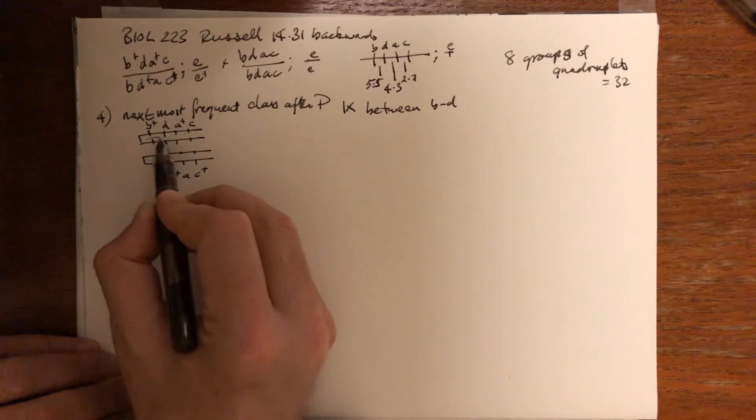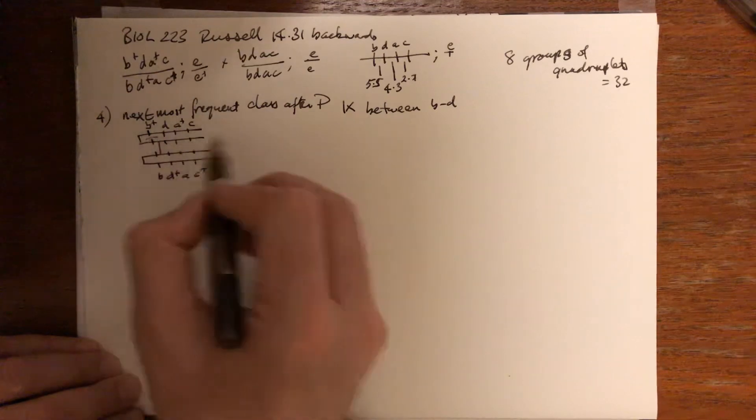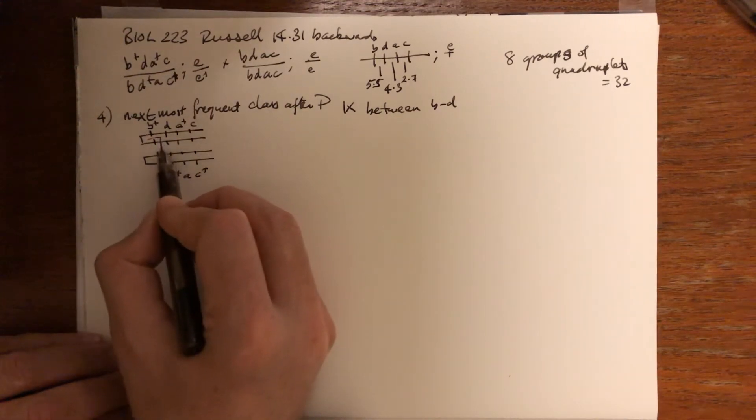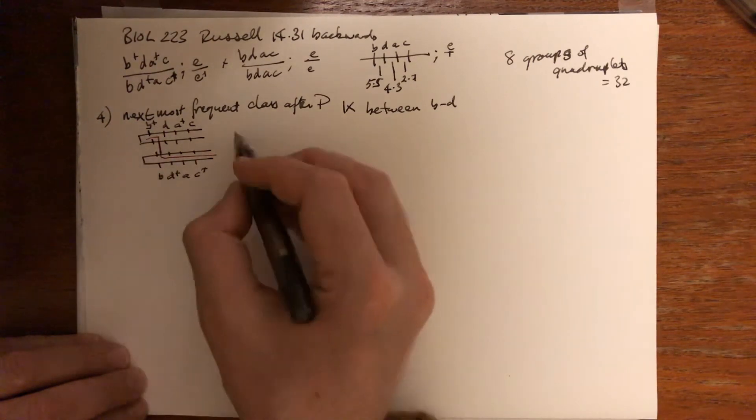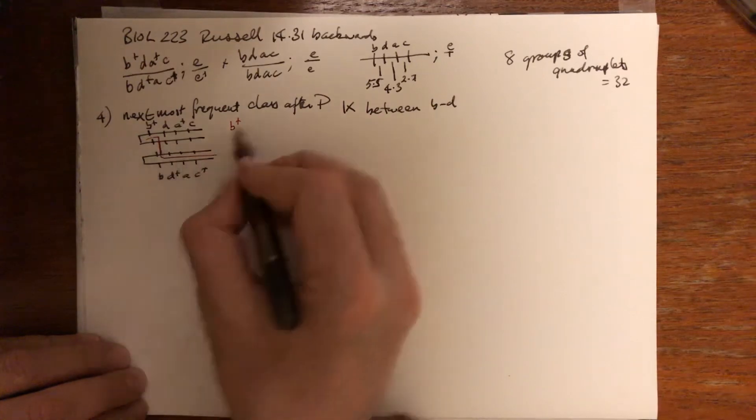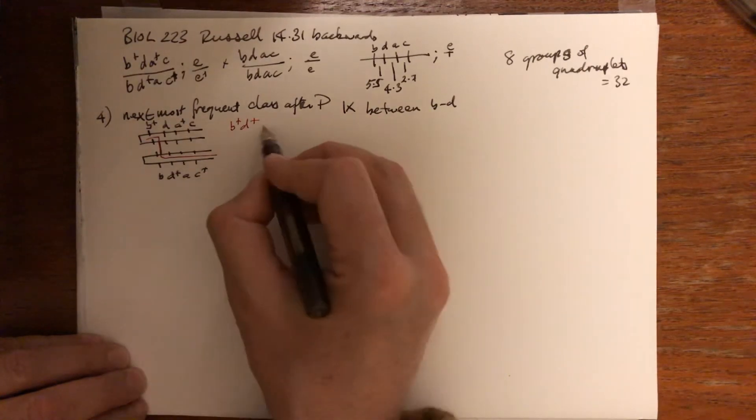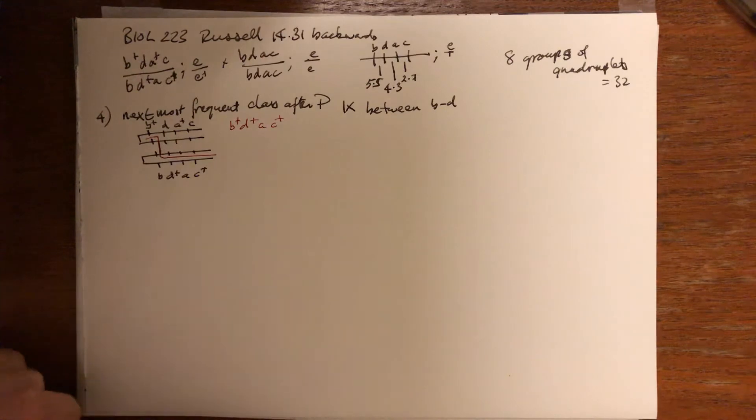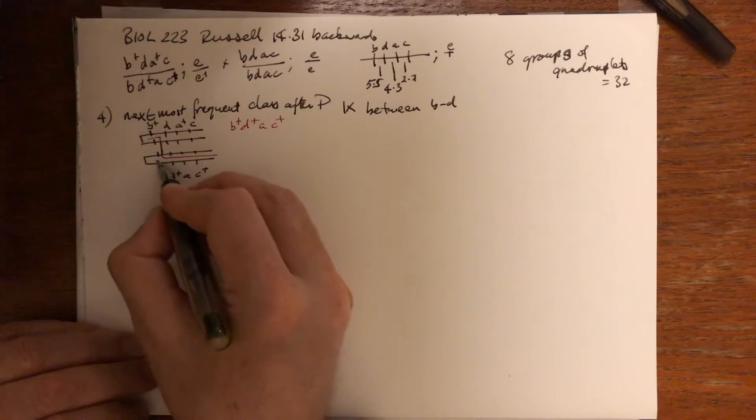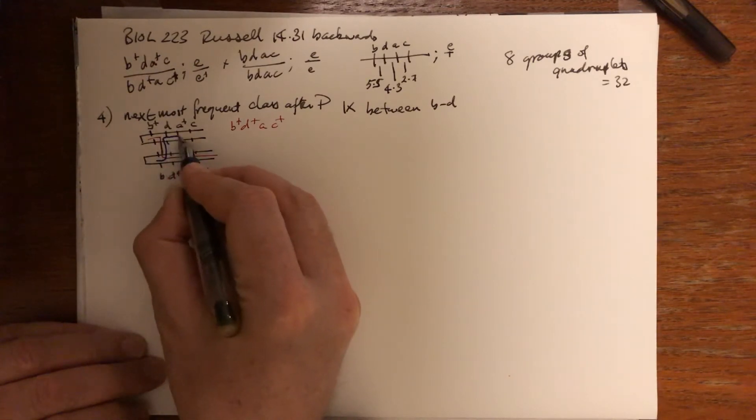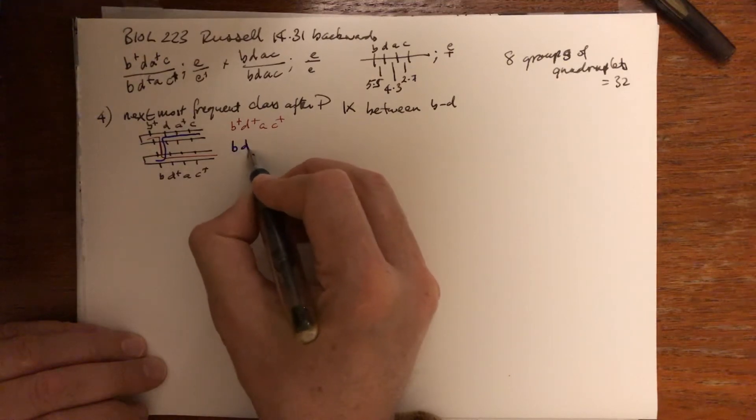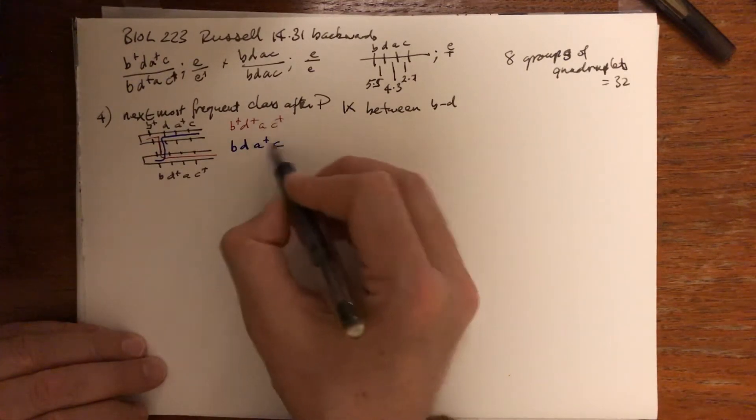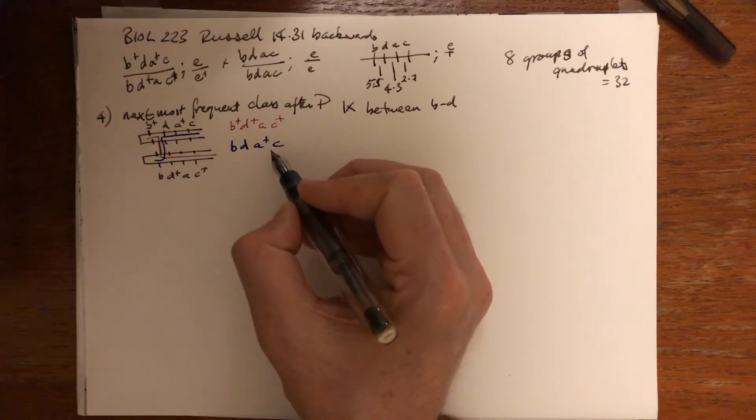The recombinants will be B+ D+ A C+, and its reciprocal, which will be B D A+ C. So that is B D A+ C. You notice that these two are reciprocal—they're reciprocal, and if they're not, something's wrong.